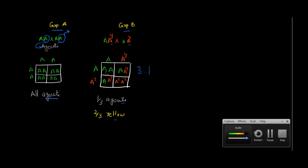Here's what is happening: genotype AA results in agouti coat, while genotype AA^Y — the presence of the A^Y allele — results in yellow coat color. The homozygous condition A^Y A^Y is not surviving; it kills the mice. That is why it is called recessive lethal mutation: when this allele is present in homozygous condition, it is lethal.